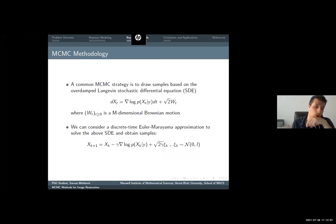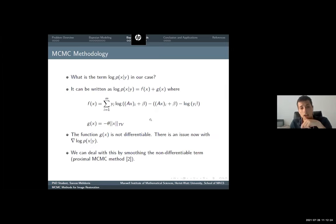However, this equation is not always available. The solution is not always available. So we consider a discrete time Euler approximation to solve the above equation, and the discretization takes this form, where gamma is a step size.